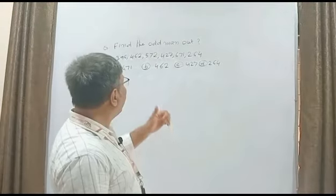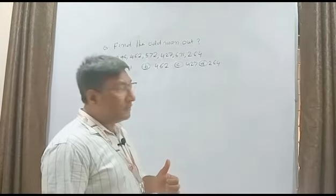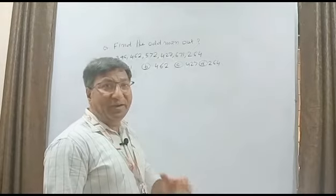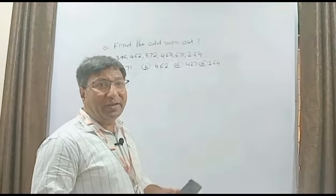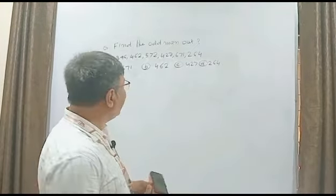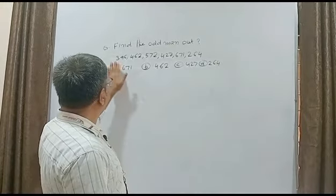Find the odd one out - that means in these numbers, one number is different. We have to find which number is different. So what is the technique? Here we are...